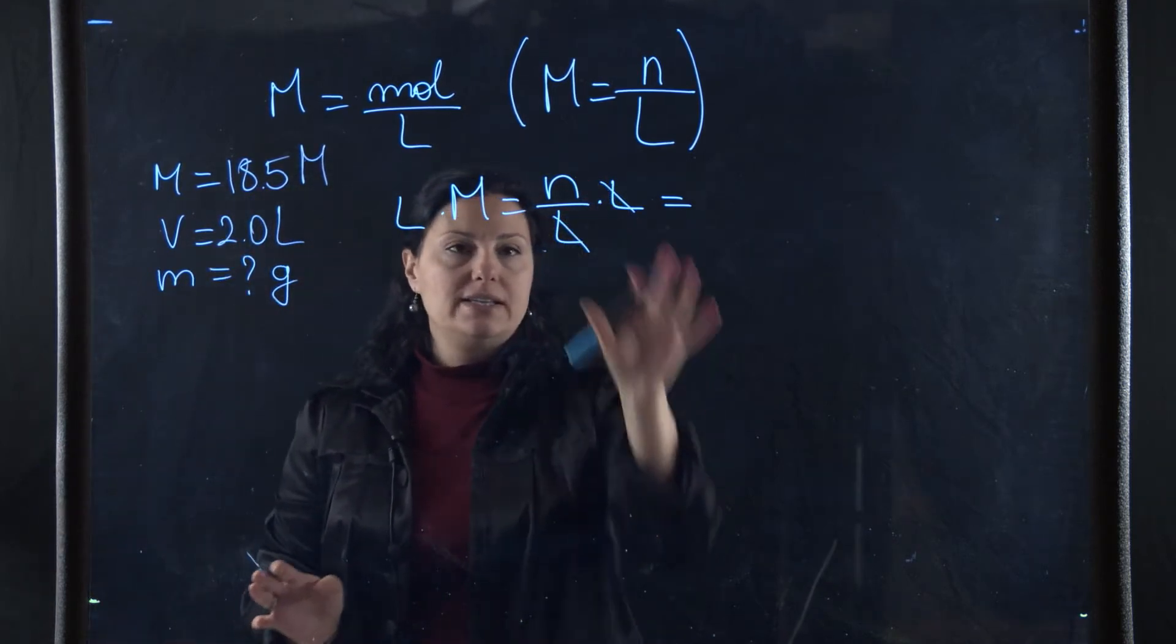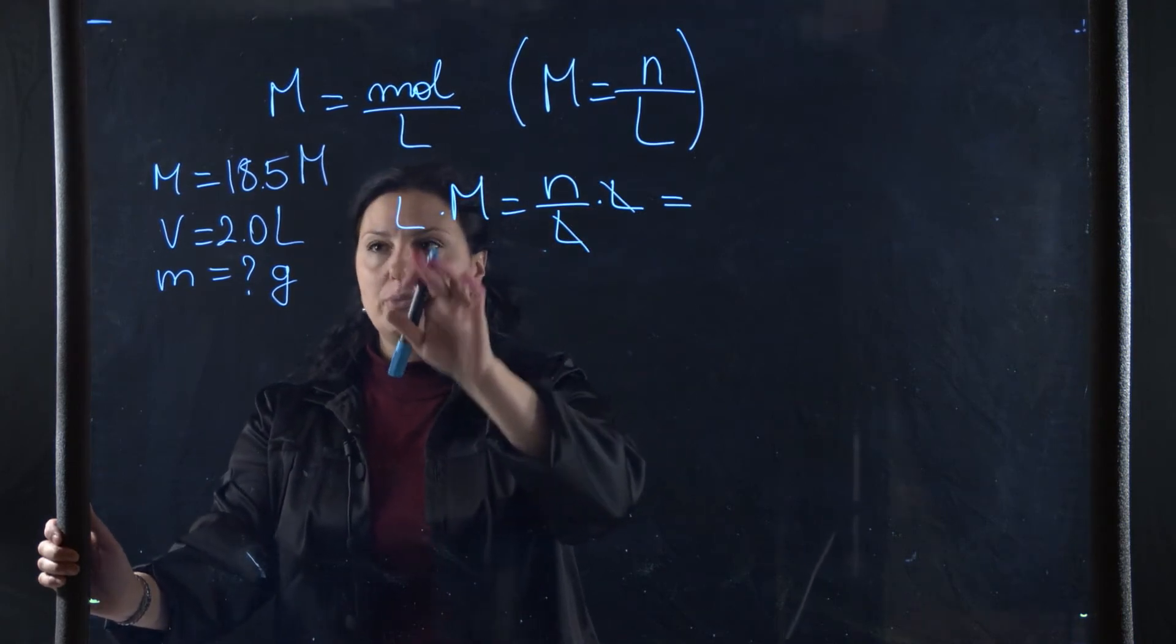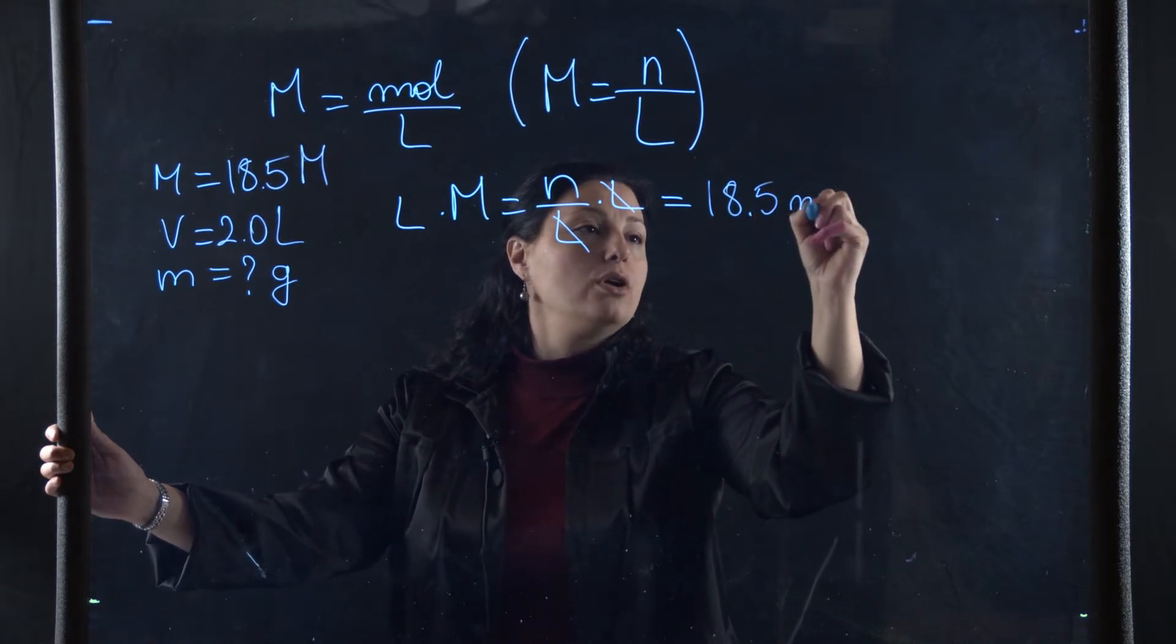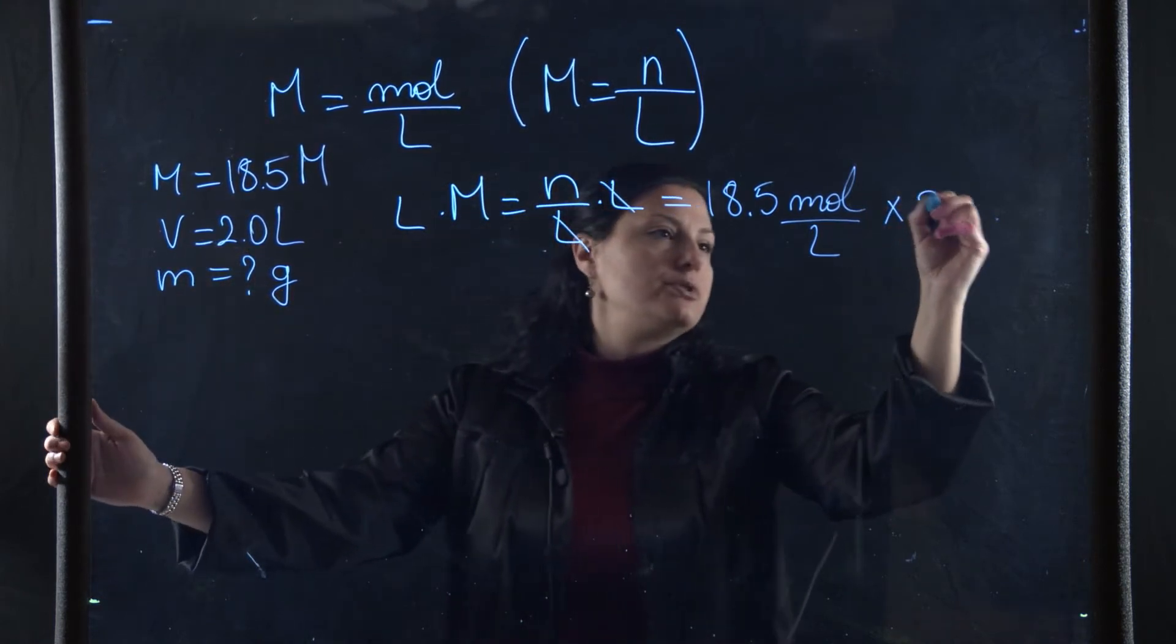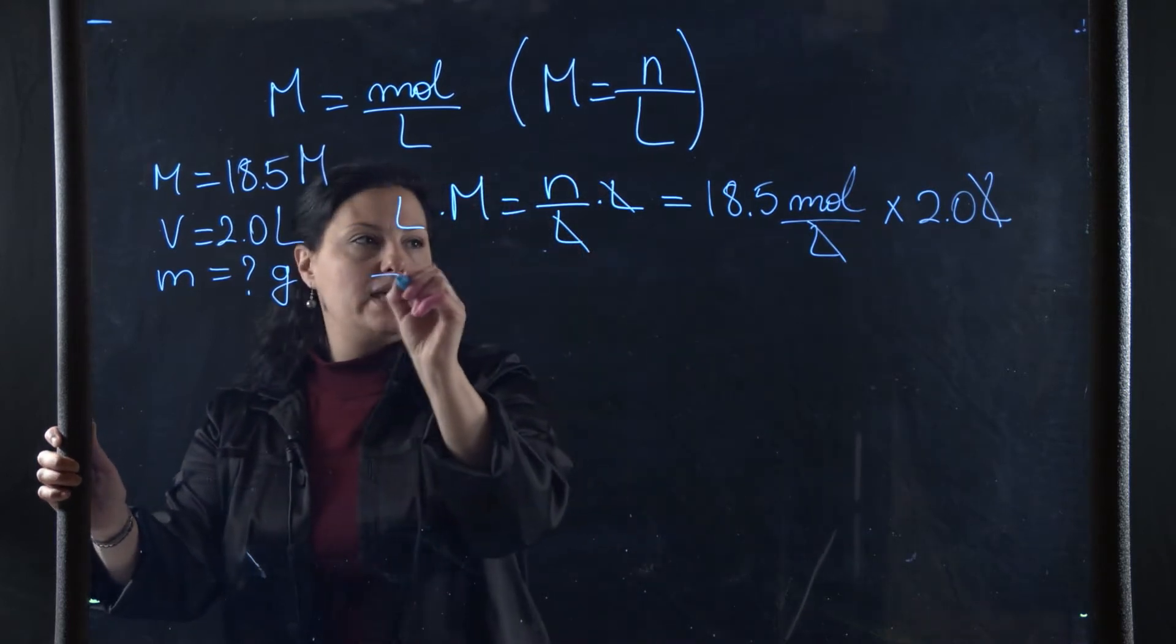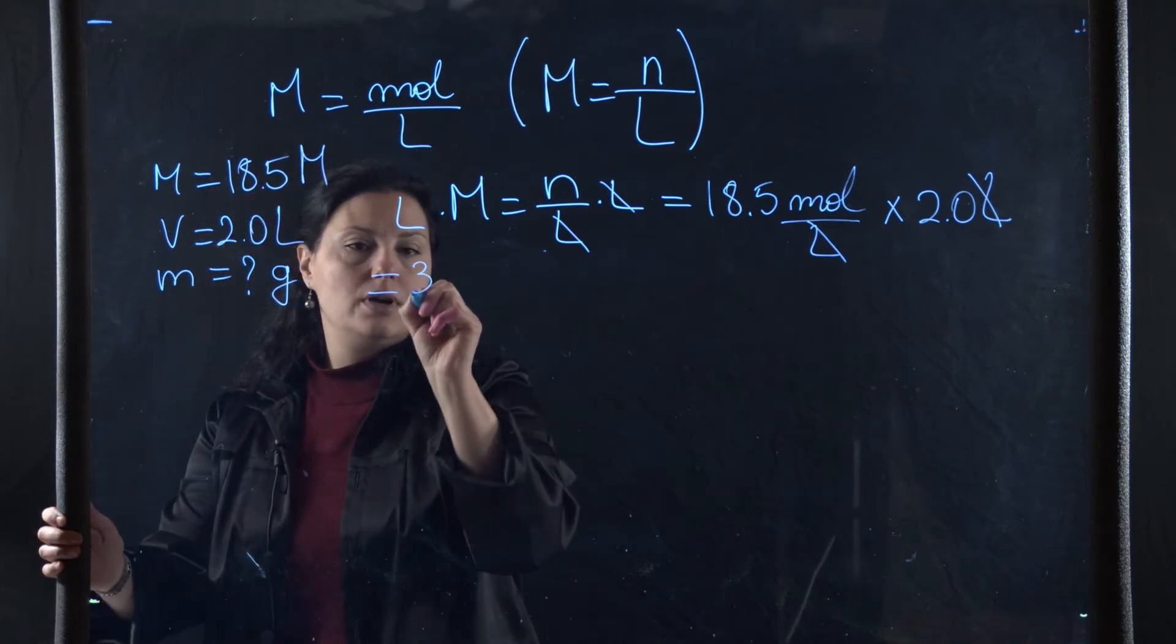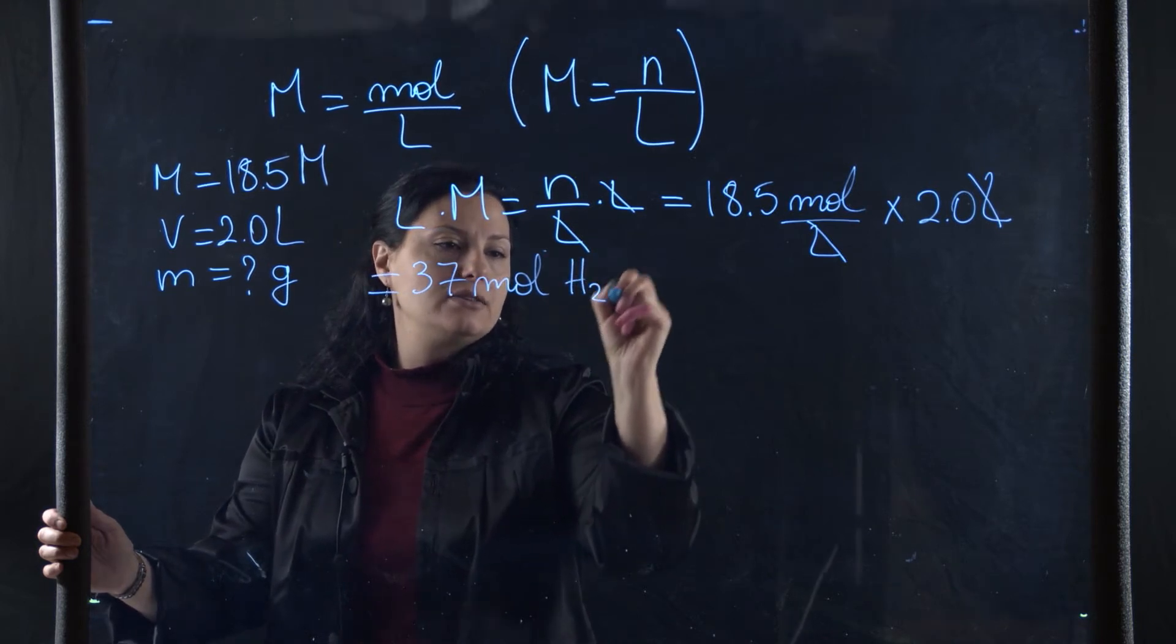The number of moles is equal to the molarity multiplied by the volume. My molarity is 18.5 molar or moles per liter, multiplied by 2 liters, which is my volume. My liters cancel and I'm left with 37 moles, pretty concentrated H2SO4.